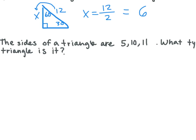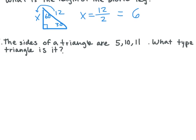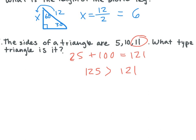Let's look at number 5. The sides of a triangle are 5, 10, and 11. What type of triangle is it? You would do 25 plus 100 equals 121. So a squared plus b squared equals c squared. How did we know 11 was going to be our c? Because it's the biggest. So we have 125. Is 125 greater than, less than, or equal to 121? Greater than. So since our c squared is smaller, it is an acute triangle.